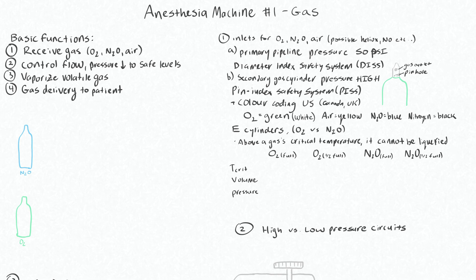We should talk about the E-cylinders because it's useful to understand the pressure in these cylinders, how long they'll last for a patient, and the important differences between the O2 and nitrous cylinders. One very important difference between these tanks is the gas versus liquid status of them, and that's because of the critical temperature of each of these gases.